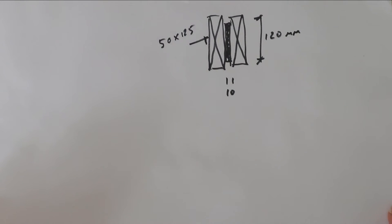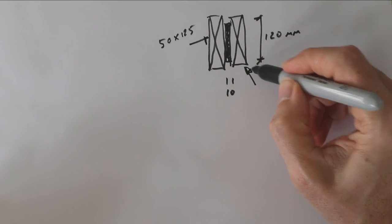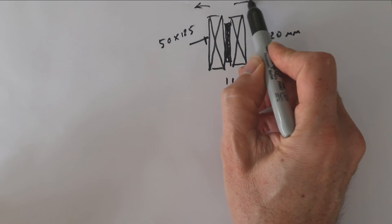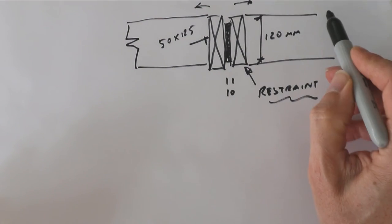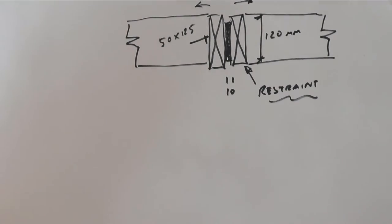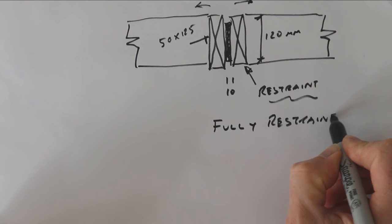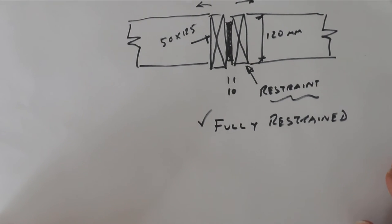So how do we work out the strength of this flitch beam? Well, the simplest way of doing it is to use the timber simply as a restraint, which means that this beam can't really buckle this way or this way. And as long as we also have timbers trimming in from either side here—we've got our roof timbers trimming in because our roof is spanning from left to right—then we can count this beam as being fully restrained. What that means is we don't need to worry about buckling.